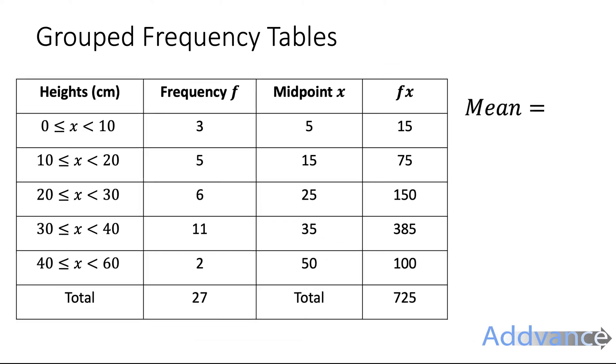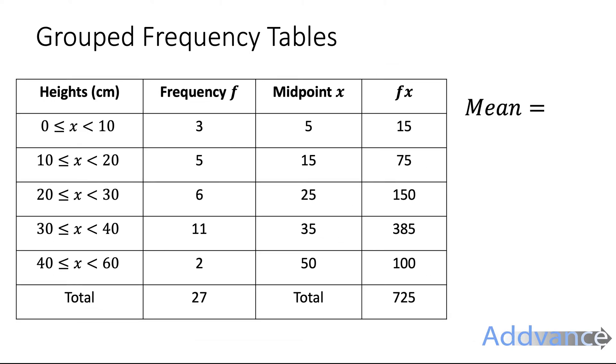To work out the mean we do the sum of the fx divided by the sum of the frequency. So 725 divided by 27. Type into your calculator you will get 26.85. That's the mean. That's the hard one.